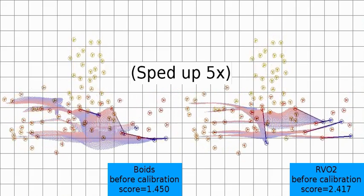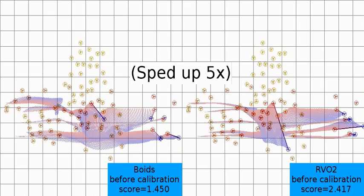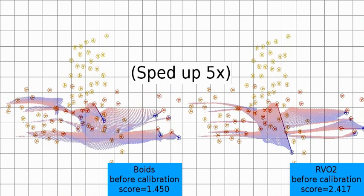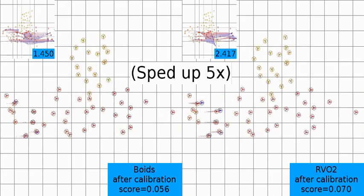It is then this subset of pedestrians that we evaluate. With stock parameters, simulated agents drift away from their real counterparts, which is not the case anymore after calibration.